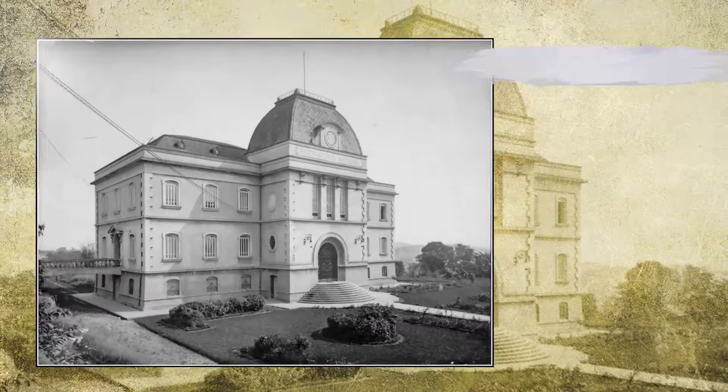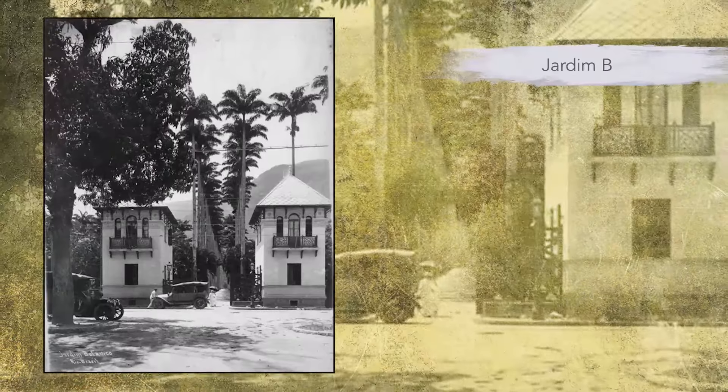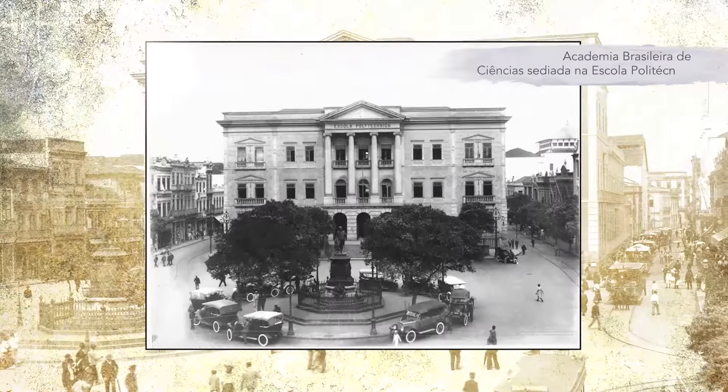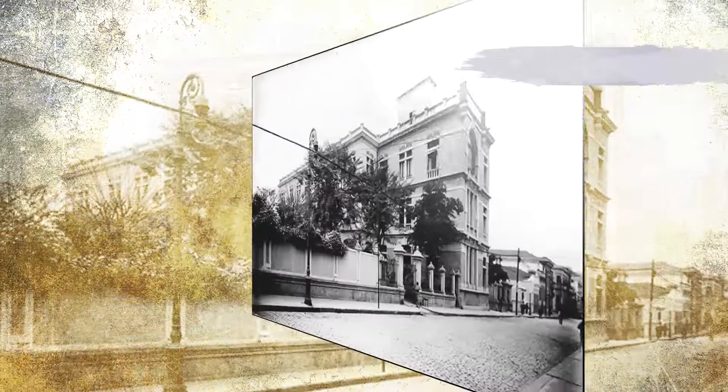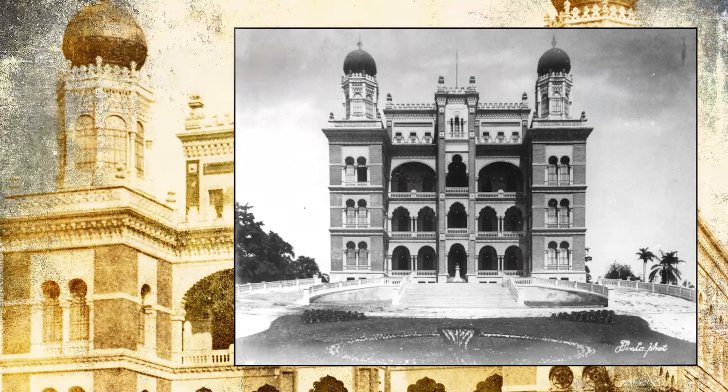Um destaque foi o fato de ter sido realizada, exatamente no dia 7 de setembro de 1922, a primeira transmissão radiofônica do país — transmitindo o pronunciamento do presidente Epitácio Pessoa. Outra dimensão interessante foi a participação de várias instituições científicas de referência do Rio de Janeiro: o Museu Nacional, o Observatório Nacional, o Jardim Botânico, a Academia Nacional de Medicina, a Academia Brasileira de Ciências e o Instituto Oswaldo Cruz, que abriram suas instalações para apresentar seus acervos e sediaram recepções e congressos.